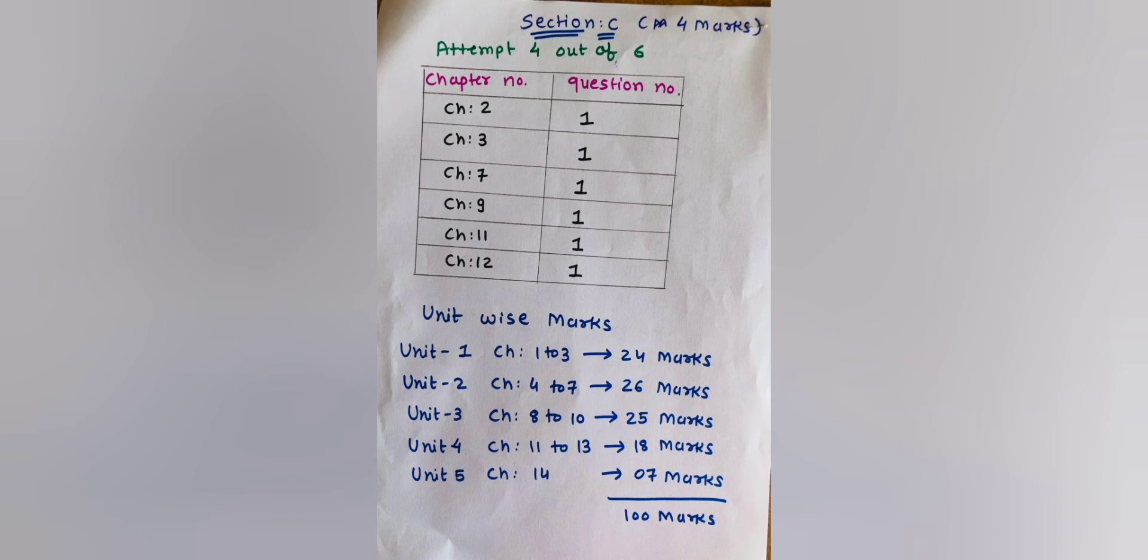Now, unit-wise marks. Unit 1 includes Chapters 1 to 3 and covers 24 marks. Unit 2 has Chapters 4 to 7 and covers 26 marks. Unit 3 has Chapters 8 to 10 and has 25 marks.